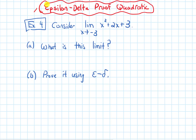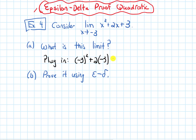In this video, we will do an epsilon-delta proof for the limit of a quadratic function. The example asks us to look at the limit as x approaches negative 3 of x squared plus 2x plus 3. Part A asks what this limit is. We can find it using algebraic methods by plugging in: negative 3 squared plus 2 times negative 3 plus 3, which gives 9 minus 6 plus 3, which is 6.